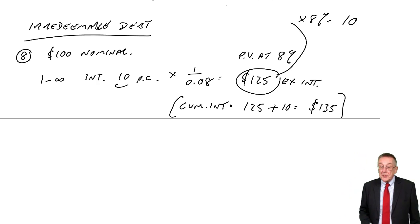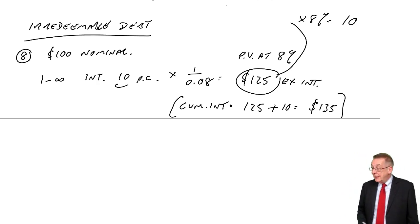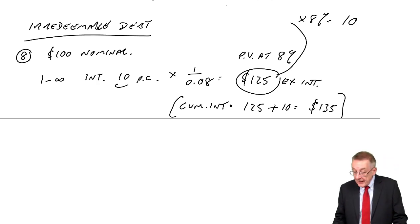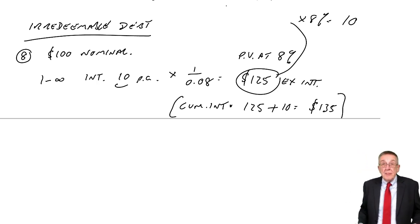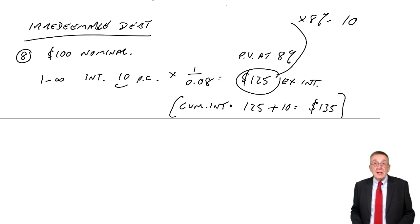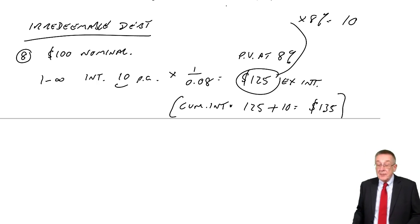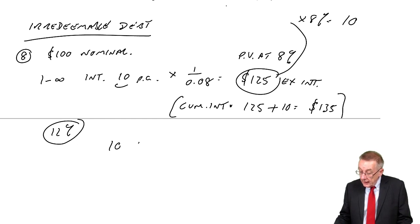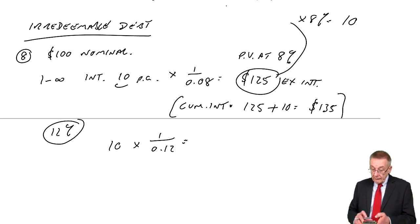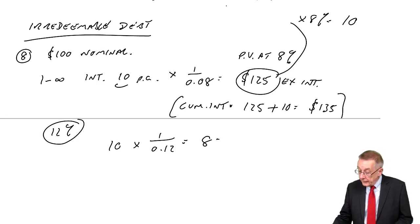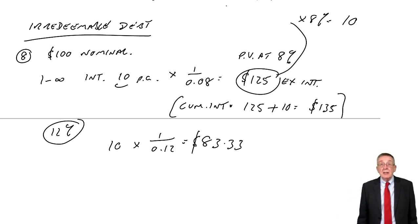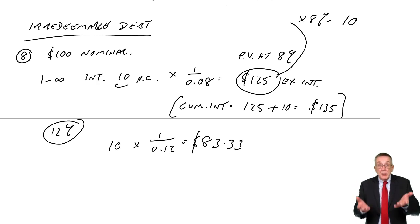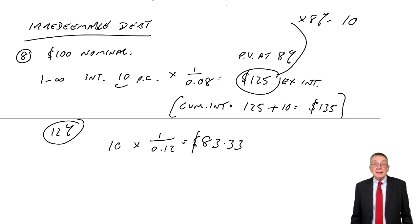Suppose for the same example, general interest rates went up to 12%. If you can get 12% from the bank, you'd only be prepared to buy these debentures if they were giving 12%. So at 12%, with $10 a year, 1 over the required return gives a market value of $83.33. That's exactly how things go in real life — as general interest rates go up and down, the market value of debt goes up and down.